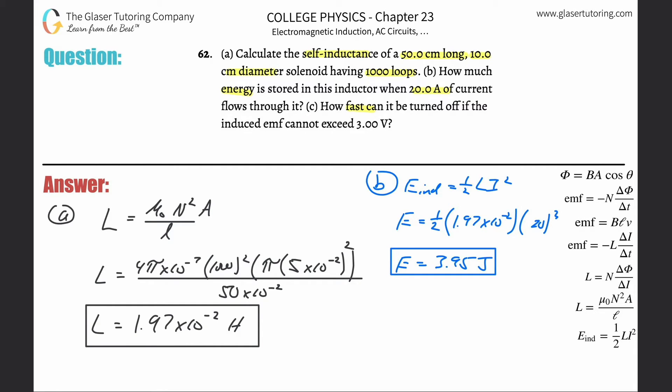Let us see: how fast can it be turned off if the induced EMF cannot exceed 3 volts? We need this formula that the self-induced EMF will equal the negative—we're going to get rid of the negative sign—the inductance multiplied by the change in current divided by the change in time. If I have to solve this thing for time, we're just going to cross multiply. We can switch the EMF and the time.